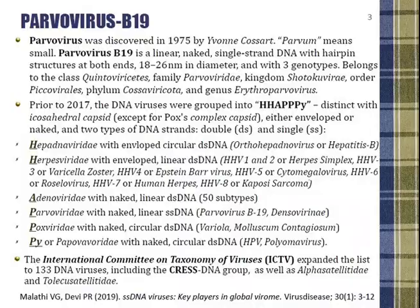Parvovirus B19 was discovered in 1975 by Cossart, an Australian virologist, while she was working in London. Don't confuse the suffix '19' of Parvovirus with the coronavirus in COVID-19.